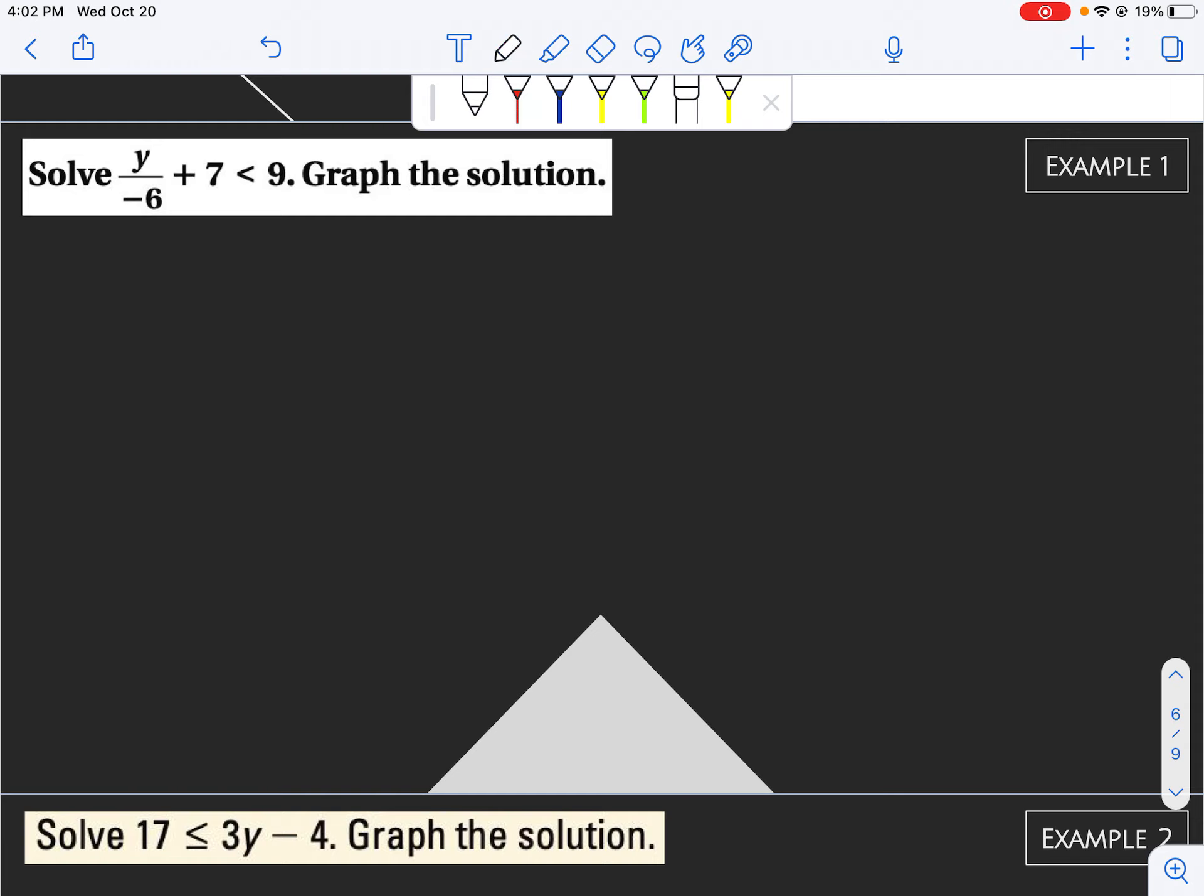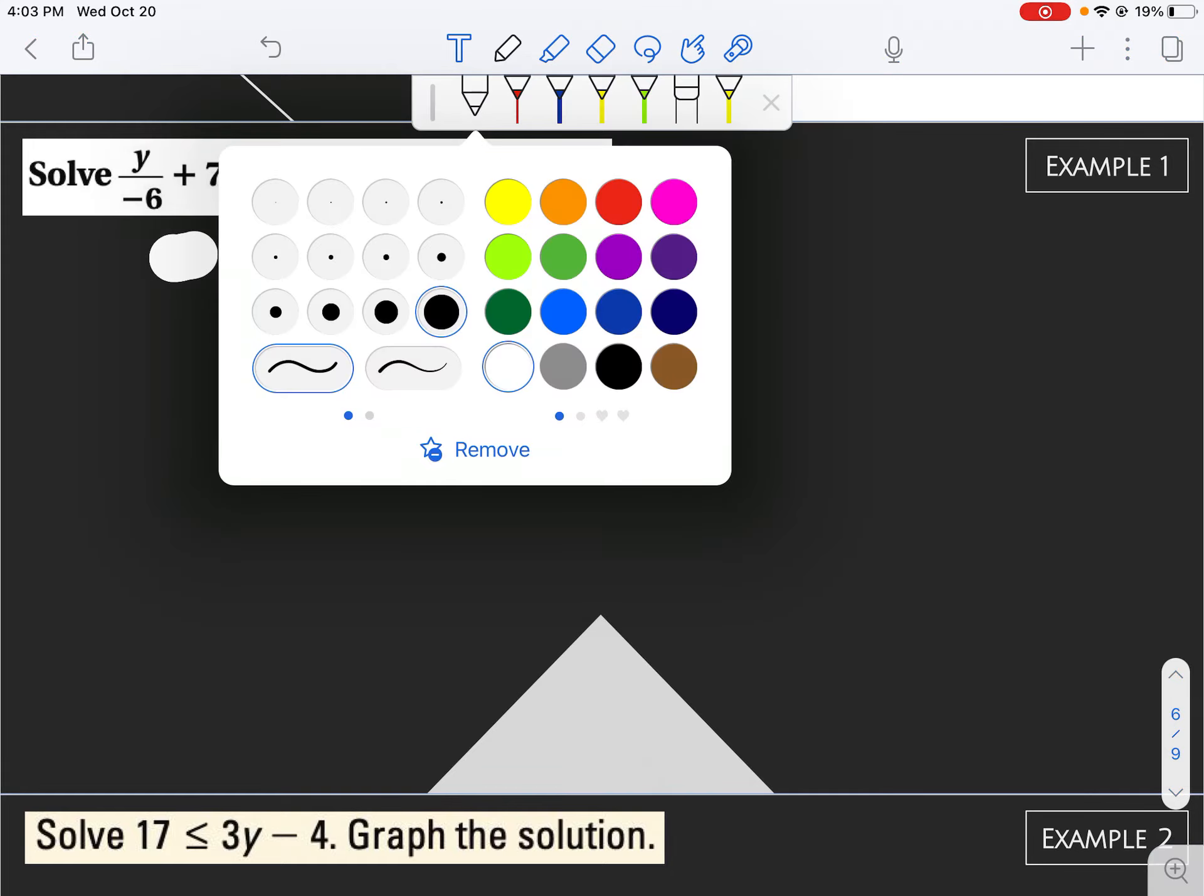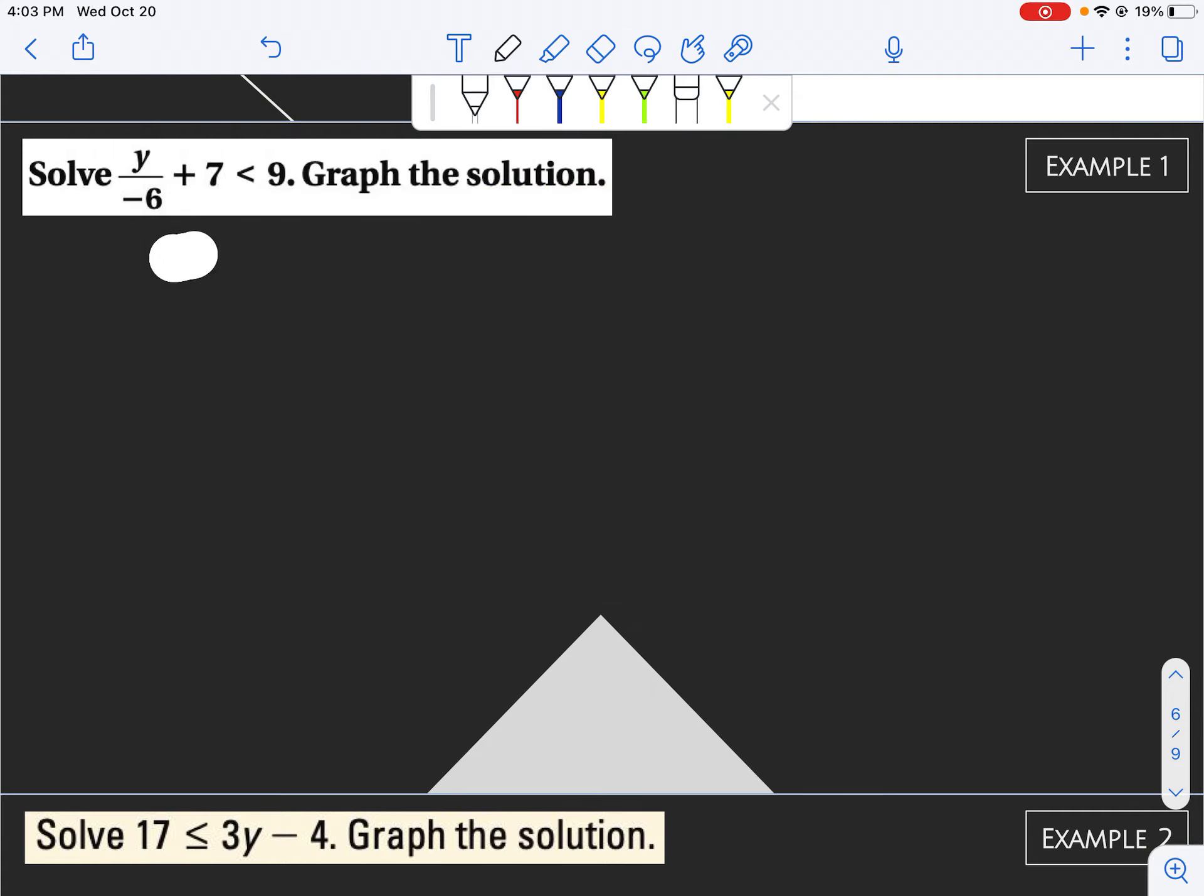So if we look at this first example, we have y divided by negative 6 plus 7 is less than 9. We're starting away from our variable. So right now, y is being divided by negative 6, and we're going to start away from that.